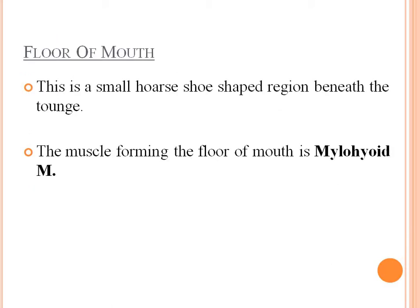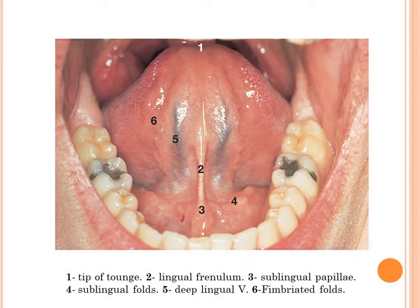The floor of the mouth is a small horseshoe-shaped region beneath the tongue. The muscle forming the floor of the mouth is the mylohyoid. Structures visible here include the tip of the tongue, the lingual frenulum, the sublingual papillae, the sublingual fold, the deep lingual vein, and the fimbriated folds.